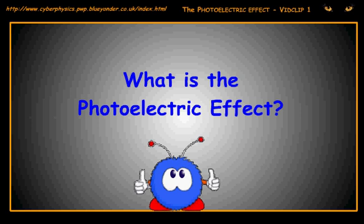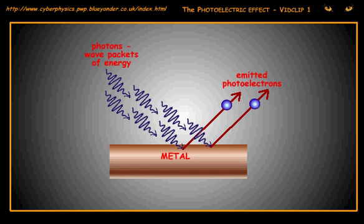What is the photoelectric effect? The photoelectric effect is the observation that if you shine electromagnetic radiation of above a certain frequency onto a metal's surface, electrons are freed from it.